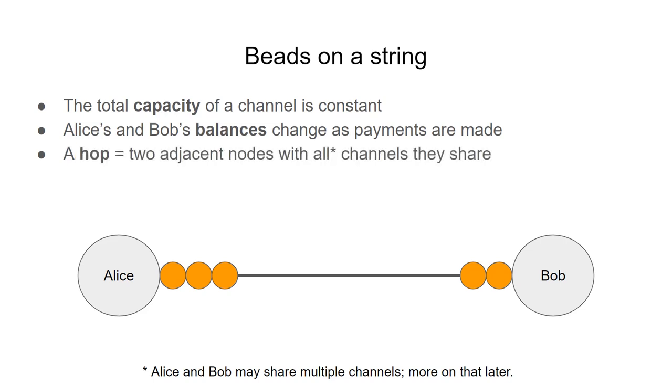We will refer to a pair of adjacent nodes like Alice and Bob and all channels between them as a hop. And here is how a simple payment works. One coin just moves from Alice to Bob.